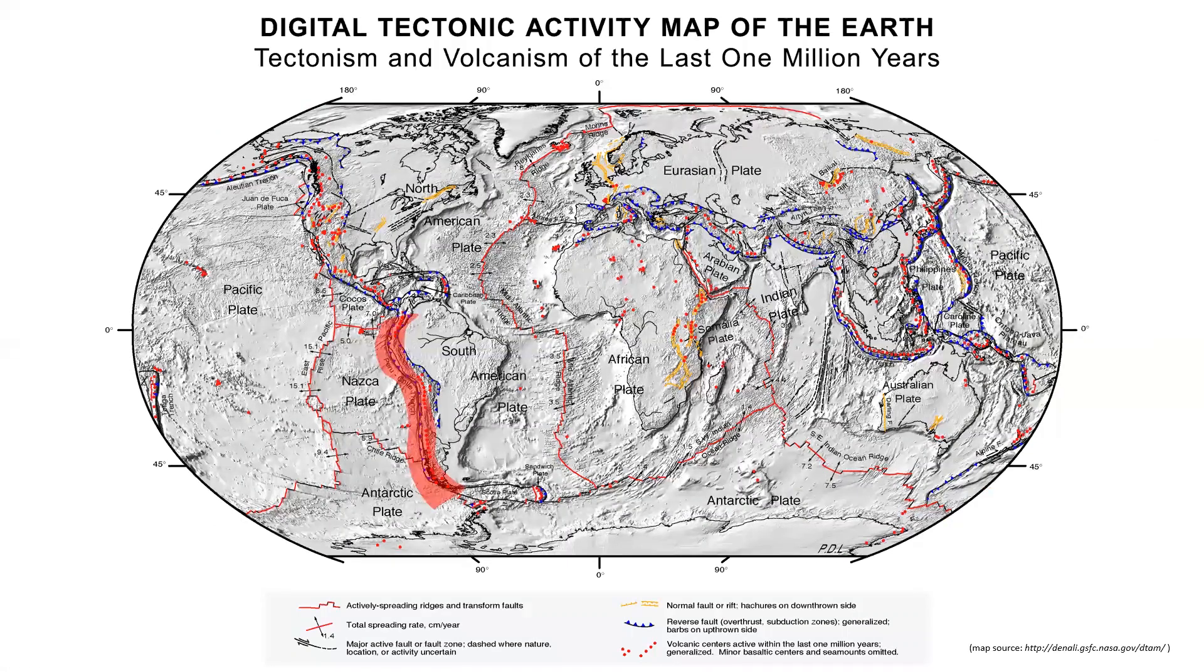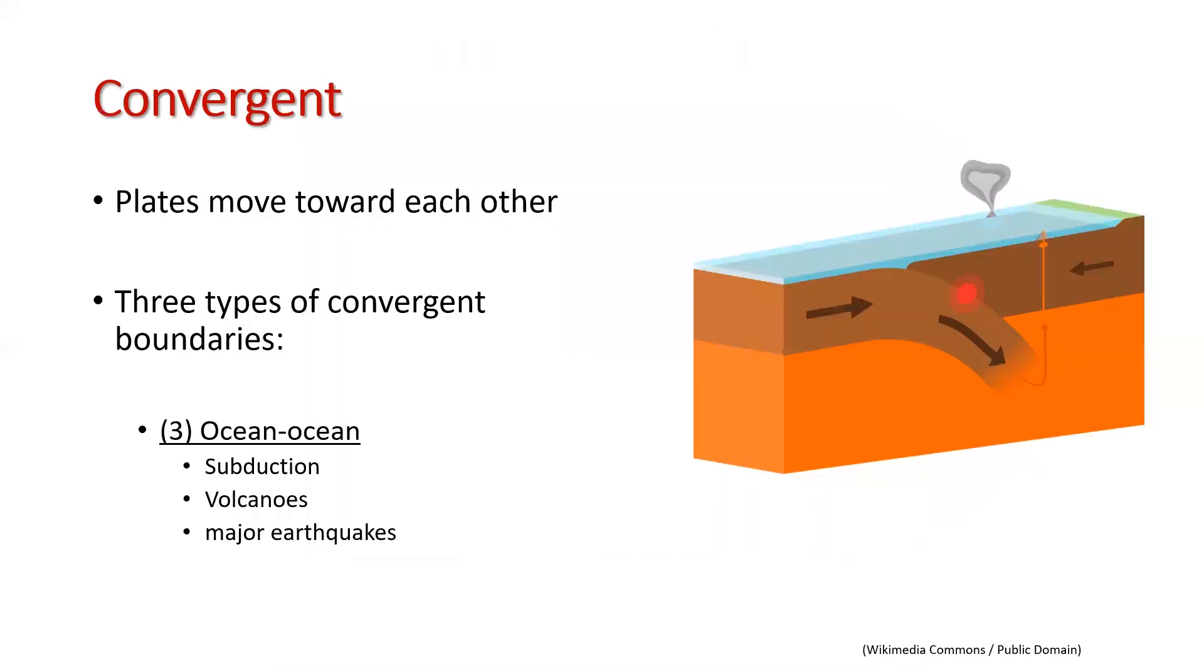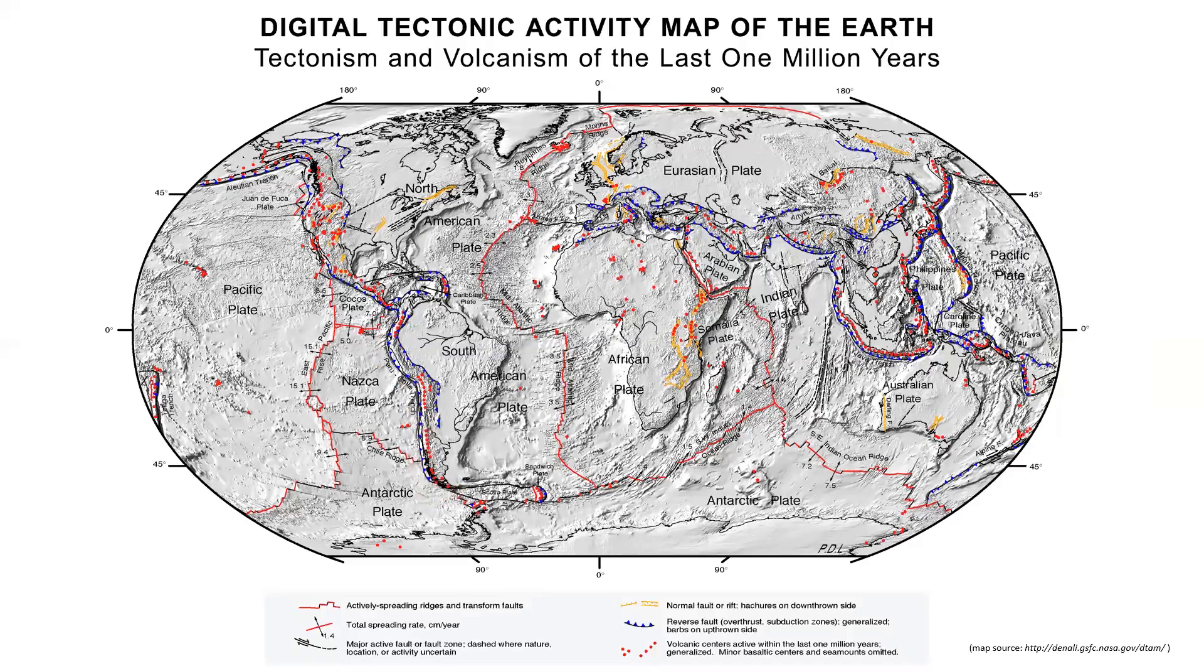The next type of convergent boundary is ocean-ocean convergent boundaries. These boundaries are characterized by subduction, volcanoes, and major earthquakes. An example of ocean-ocean convergent boundary is the Mariana Trench.